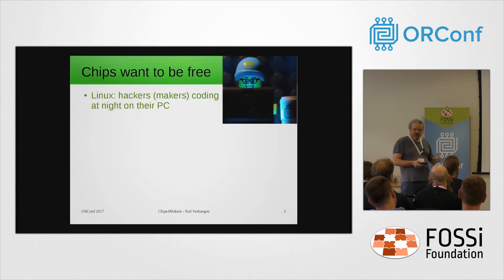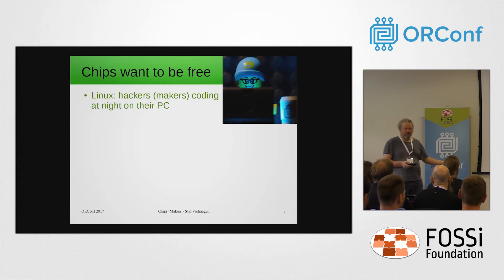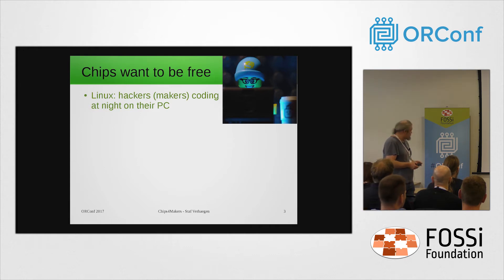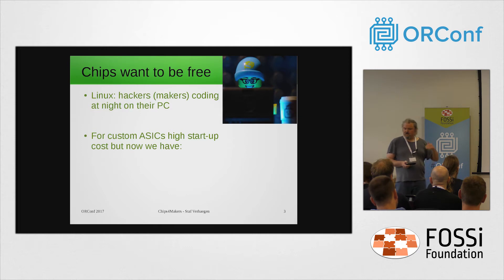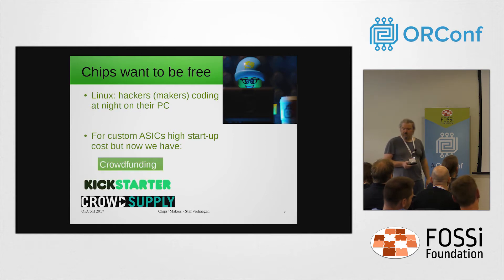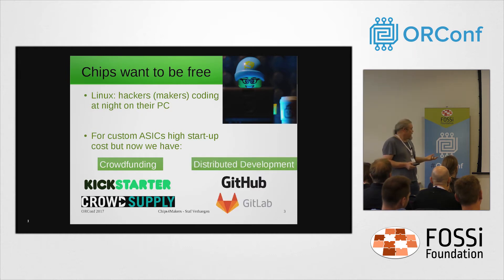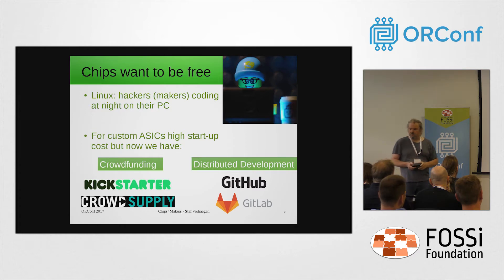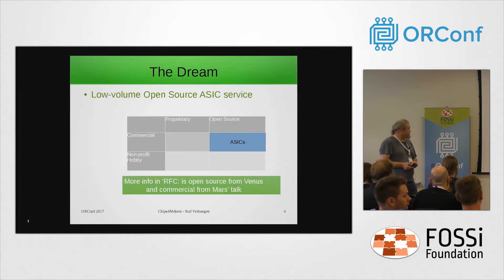Back then, people just had to buy a computer and hack at night to get Linux running. You will always have a certain startup cost to make an ASIC, but now you have crowdfunding - if a bunch of people want to make something and contribute money, you should be able to do it. You also have distributed development, not patches posted on Usenet but GitHub, GitLab and these tools. Combine things and I think we should be able to get ASICs running.